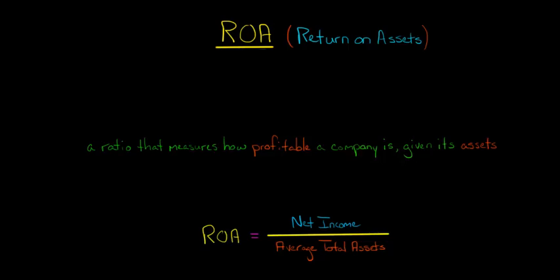In this video, I want to show you how to calculate a company's ROA, which stands for return on assets. So ROA is a ratio. It's a financial ratio that measures how profitable a company is given the assets that it has at its disposal.